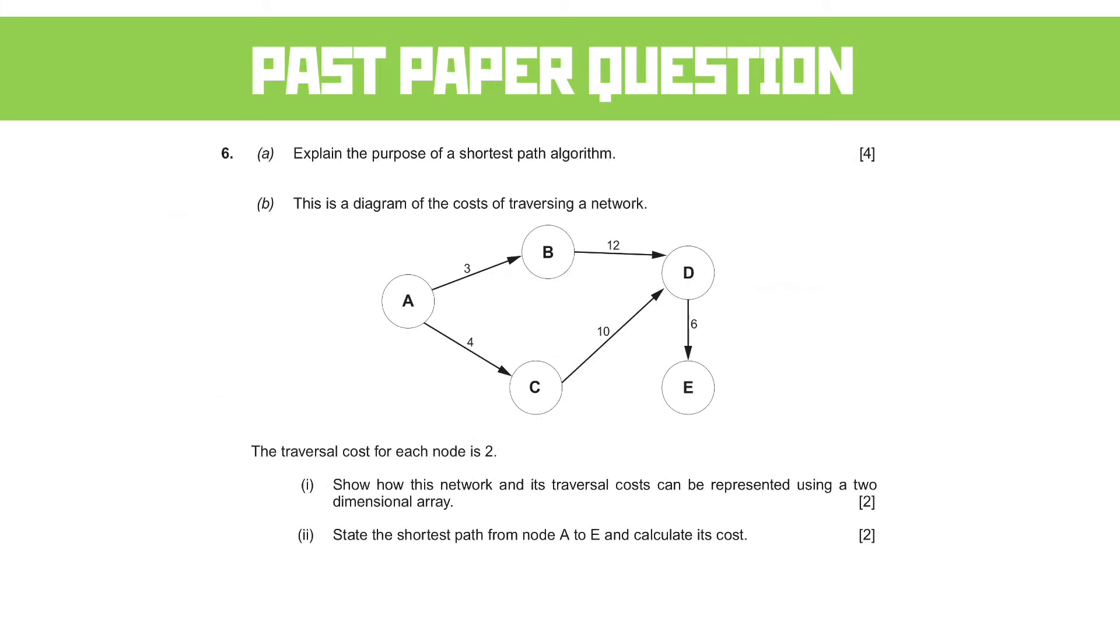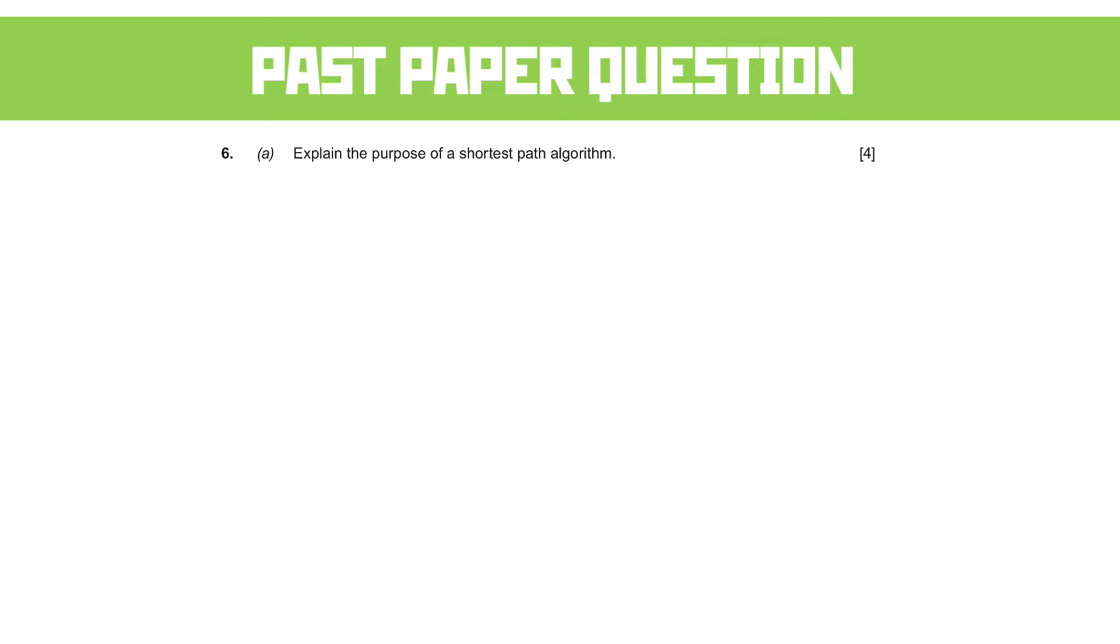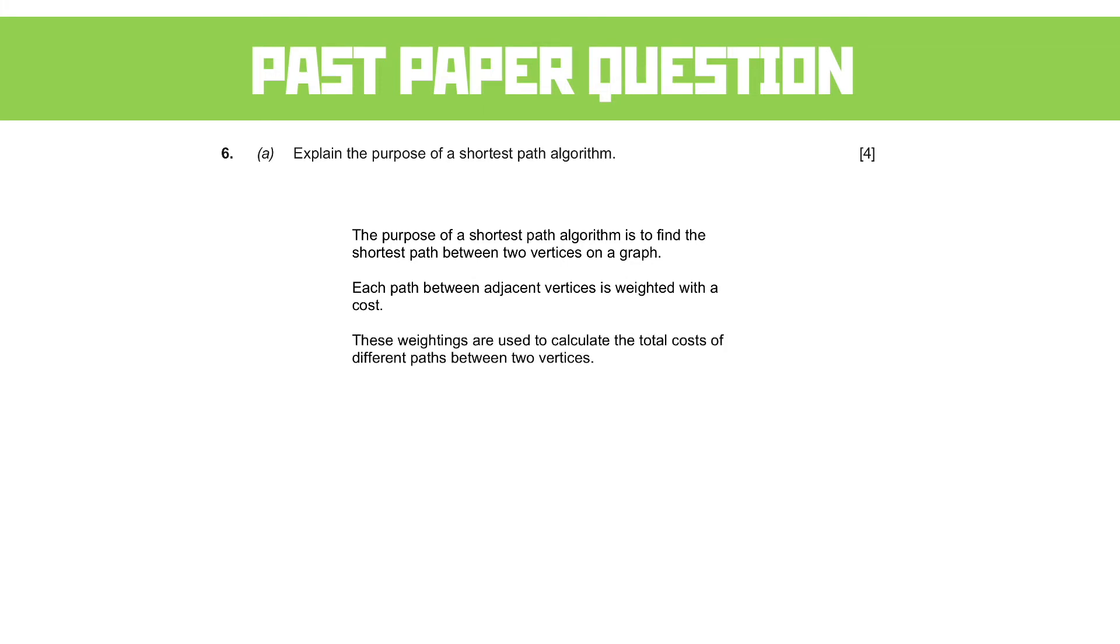Question 6. Explain the purpose of a shortest path algorithm, part A. The point of a shortest path algorithm is to find the shortest path between two vertices on a graph. Each path between adjacent vertices is weighted with a cost, and these weightings are used to calculate the total cost of different paths between two vertices. The path with the smallest cost is the shortest path.